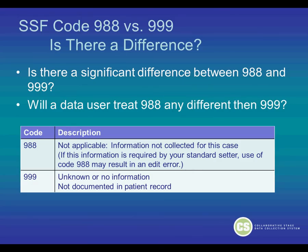Is there a significant difference between 988 and 999? Will a data user treat 988 any different than 999? Here we've included the code and the description. 988 is 'not applicable, information not collected for this case,' and 999 is 'unknown, or no information, or not documented in the patient record.'